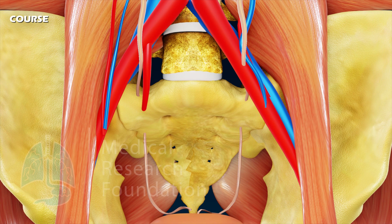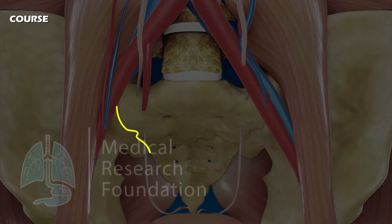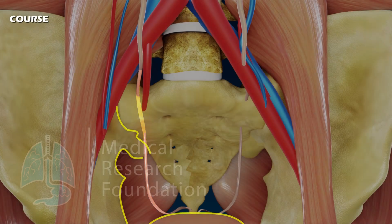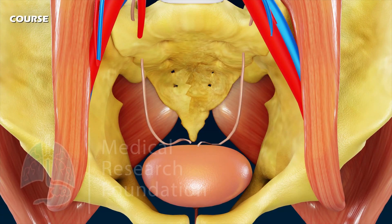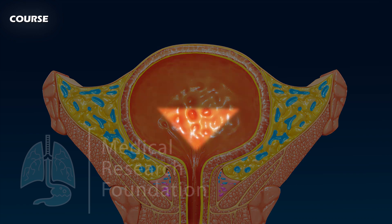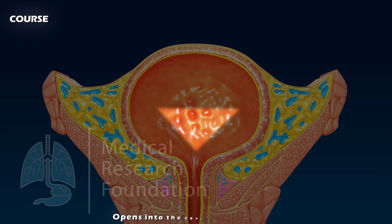The ureter enters the pelvic cavity by crossing in front of the bifurcation of the common iliac artery at the pelvic brim, in front of the sacroiliac joint. In the pelvis, it runs downward, backward, and laterally along the anterior margin of the greater sciatic notch. Opposite the ischial spine, it turns forward and medially to reach the base of the urinary bladder, where it enters the bladder wall obliquely and narrows down.